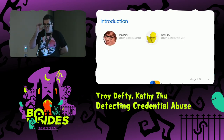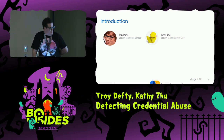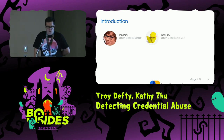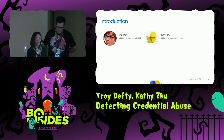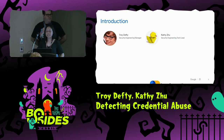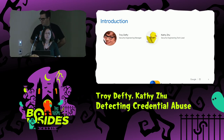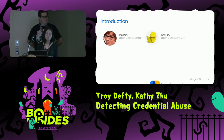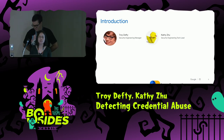Just to introduce myself quickly, I'm Troy. I'm originally from South Africa, spent most of my life in the UK and Australia. I've been in the industry for about 13-14 years — about nine of those years in red teaming before, about four years ago, I joined Google's blue team. And I'm Kathy. I work with Troy in the detection space at Google. I've worked in the security industry for about a decade and currently I'm a security engineering tech lead. My passion is in detection engineering and solving complex problems with coding. Outside of work, I love running, the outdoors, and reading books.